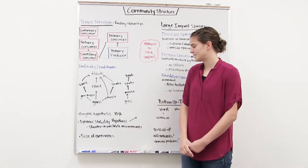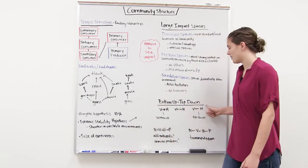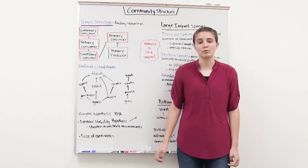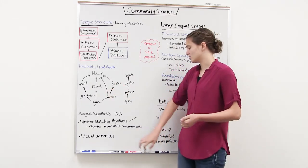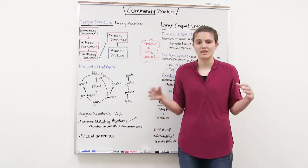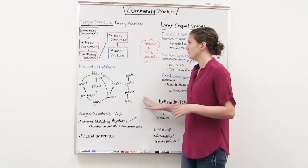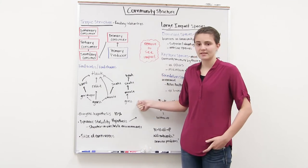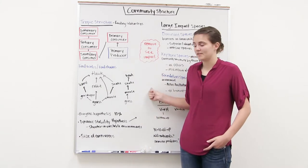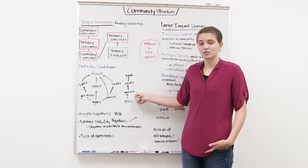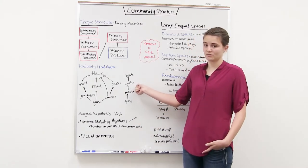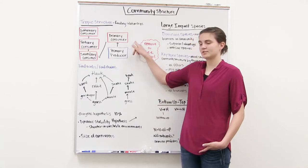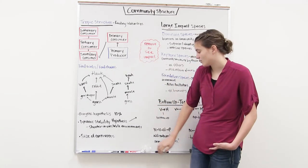Another idea is the dynamic stability hypothesis, based on bottom-up and top-down controls. Shorter chains are more stable. If we have unstable environments — say a fire gets rid of a lot of our grass — then the mouse population decreases, then the snakes, then the hawks. With a really long food chain, it's going to take a long time for something at the very top to recover.